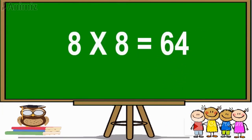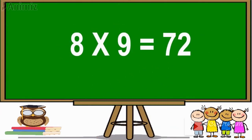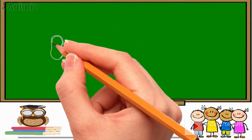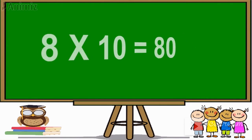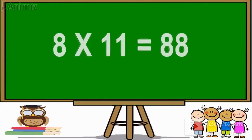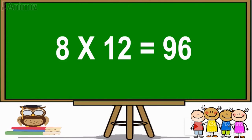8 eights are 64. 8 nines are 72. 8 tens are 80. 8 elevens are 88. 8 twelves are 96.